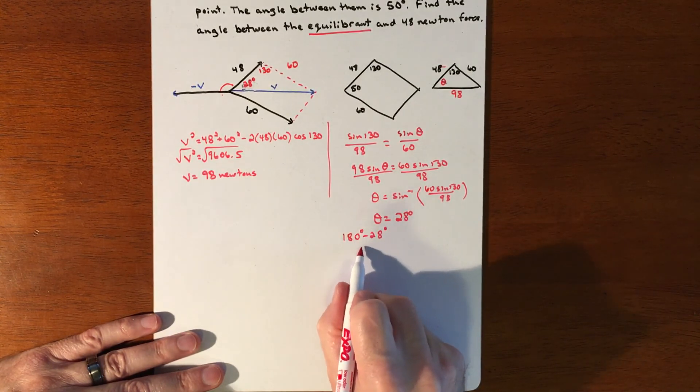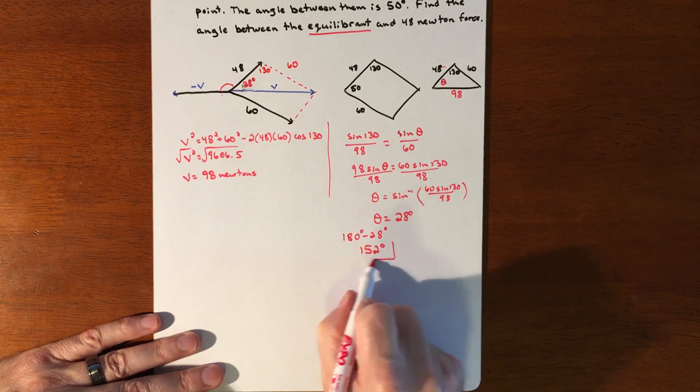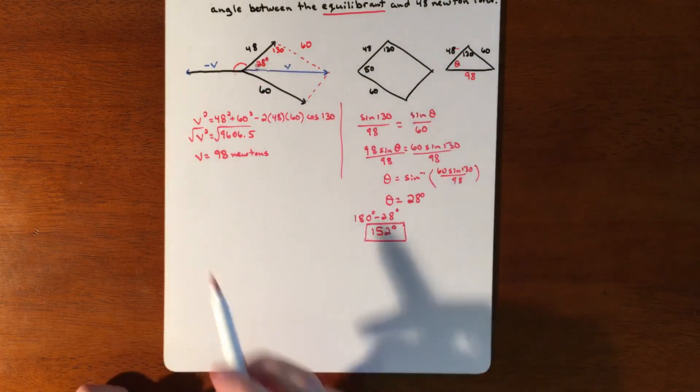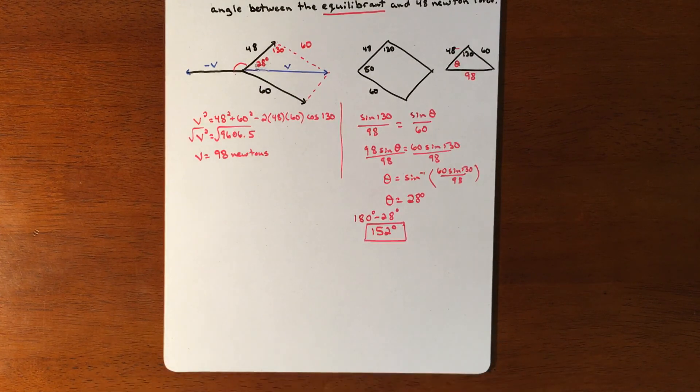And so that was finding an equilibrium and finding the angle between the equilibrium and one of the vectors.